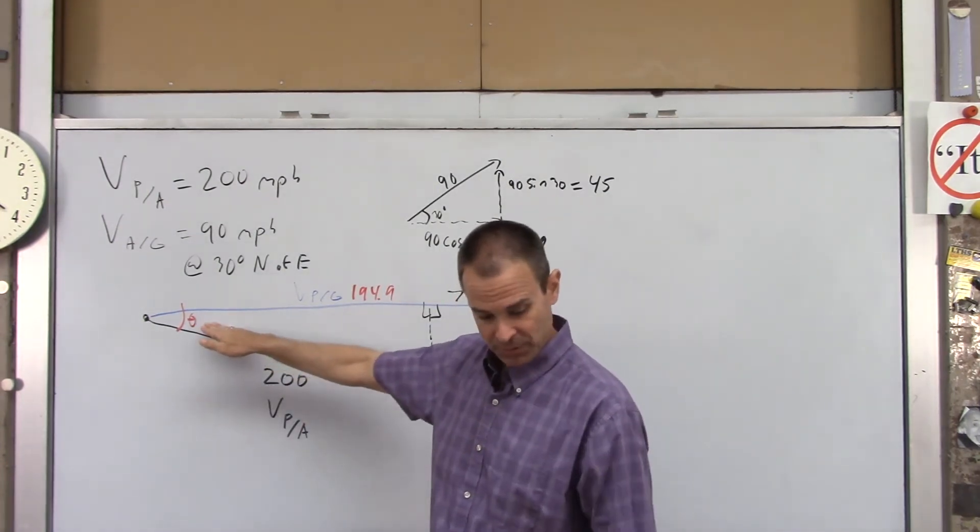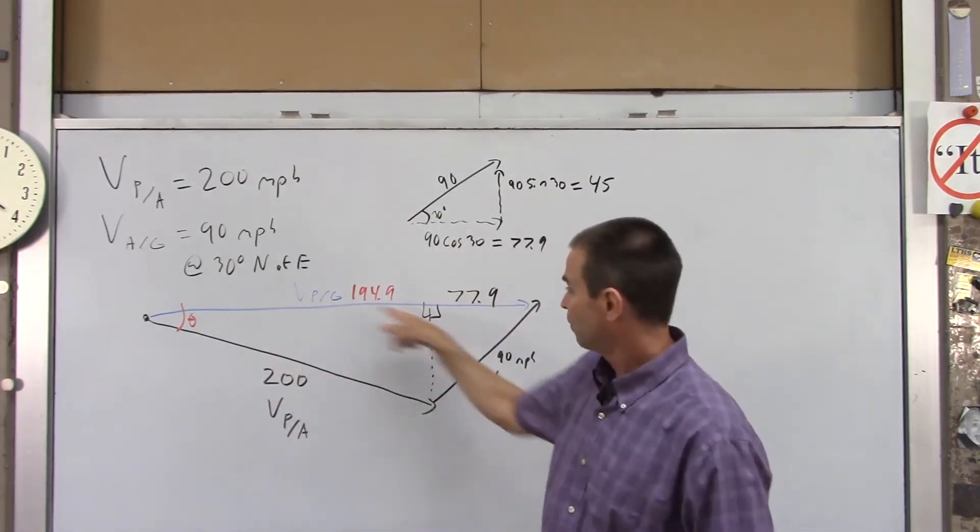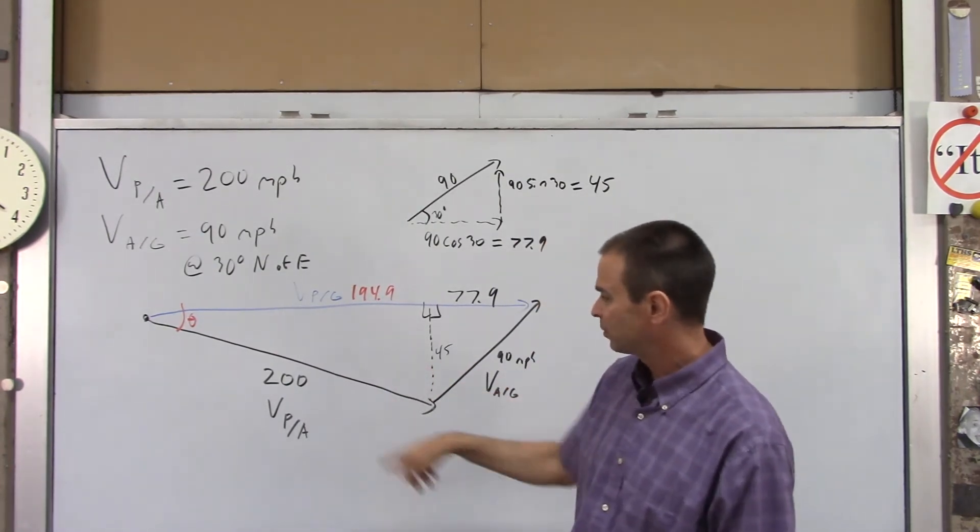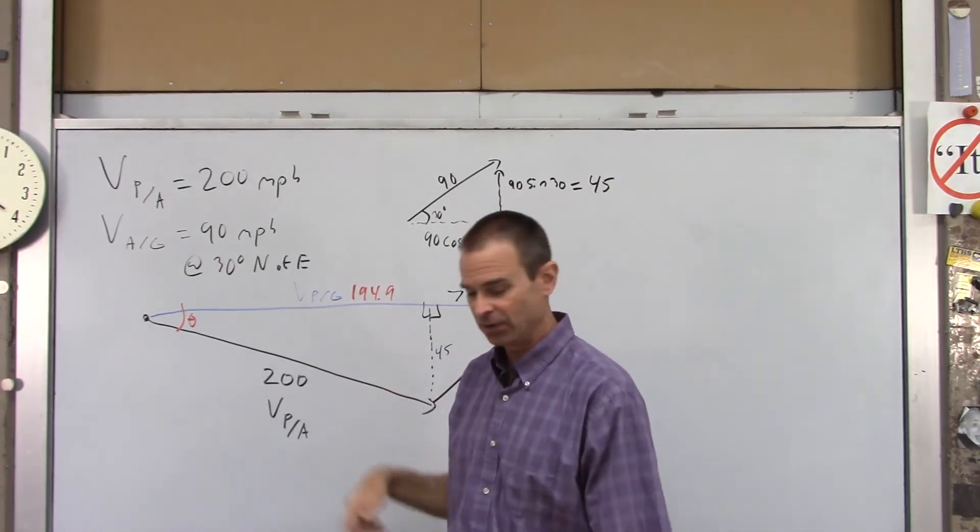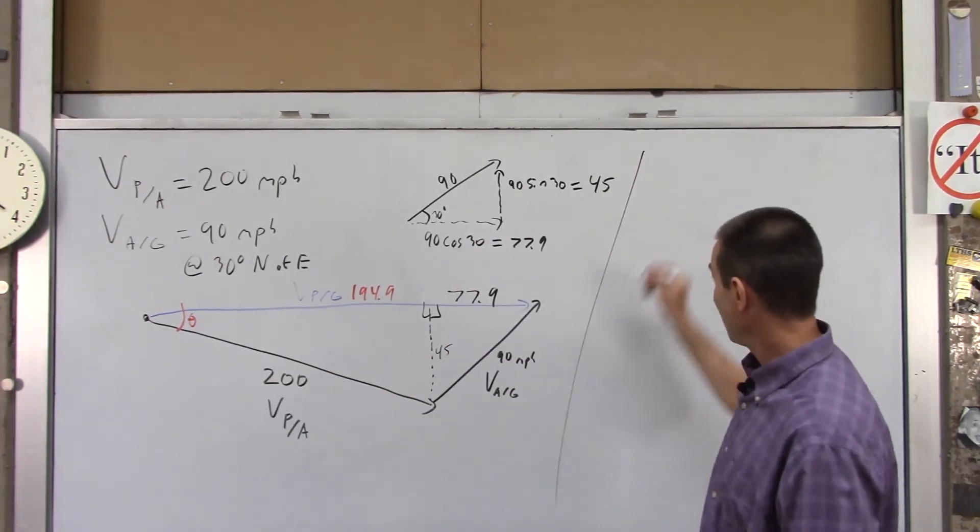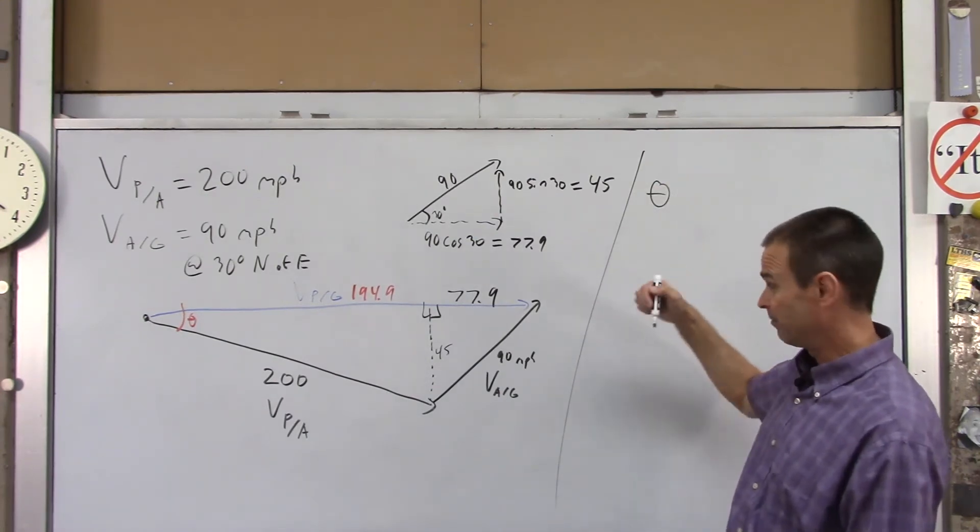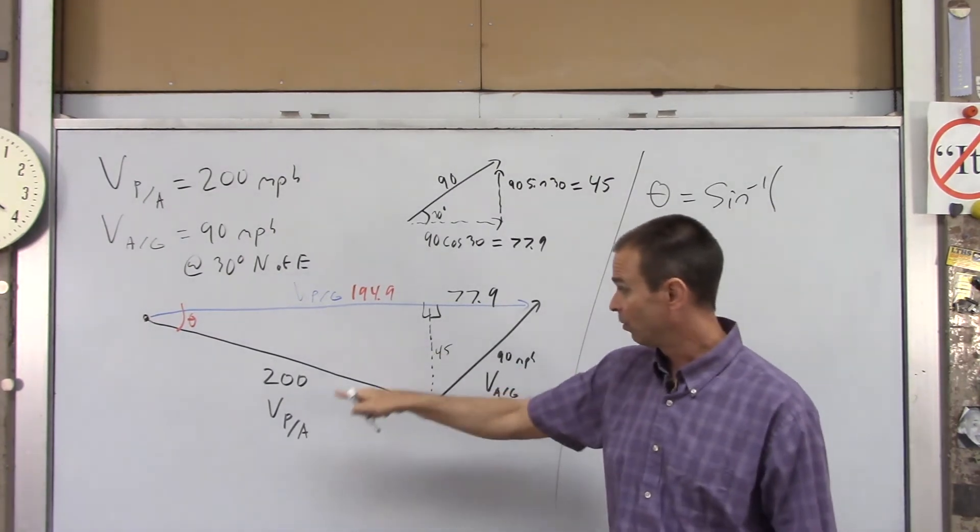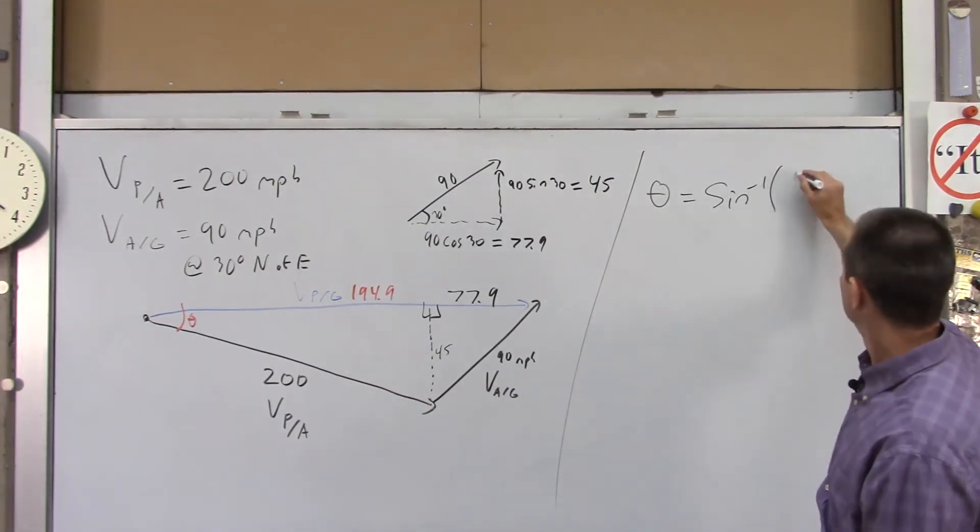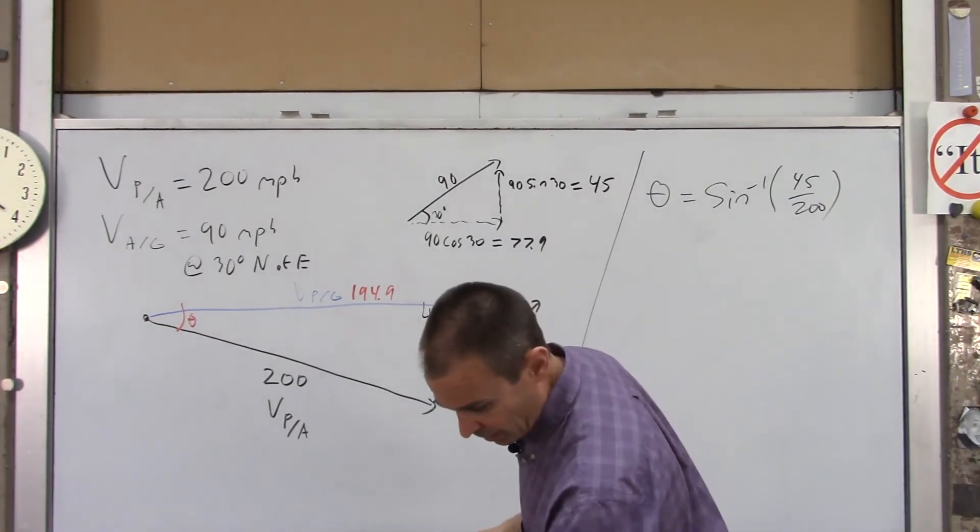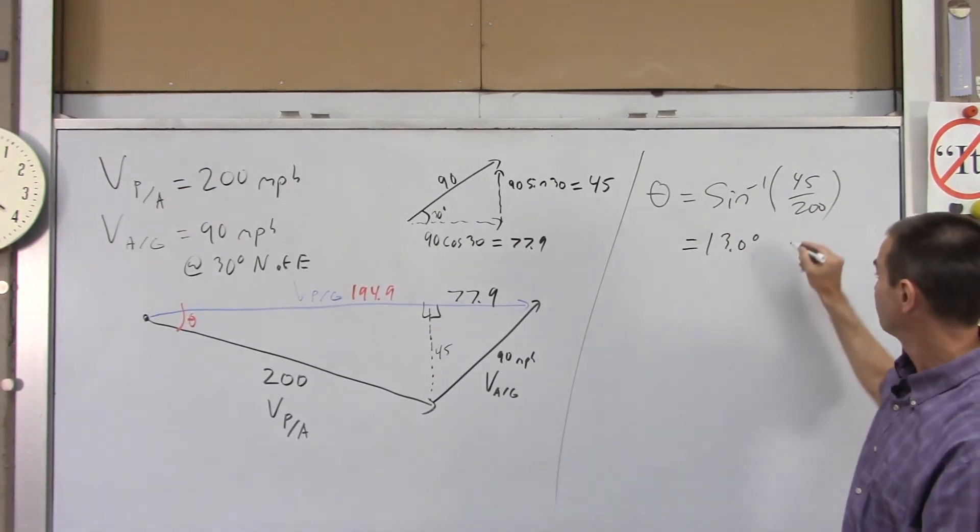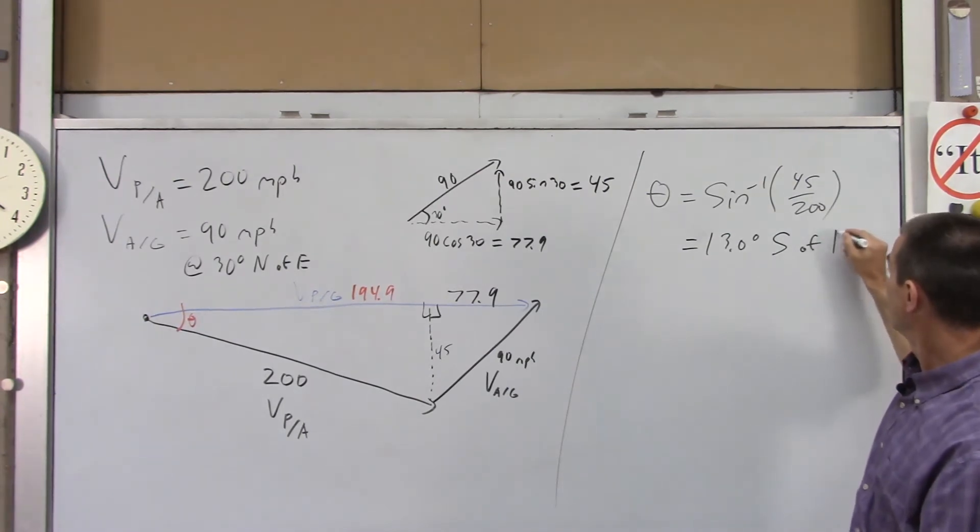To find this angle, it's very simple. We got a right triangle. I know this is an exact value, and this is an exact value. So I'm going to use my two exact values. I got the hypotenuse and the opposite leg of that triangle. That's going to be sine. So the angle the pilot has to point their plane at is the inverse sine of opposite over hypotenuse, 45 over 200. If you do that in the calculator, you get 13.0 degrees.